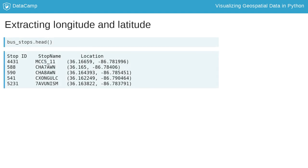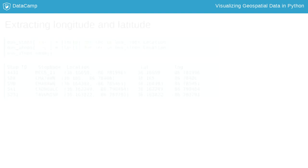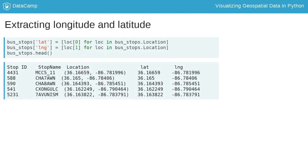Data sets won't always have latitude and longitude neatly separated. Sometimes they are embedded, like in the location column of this bus stop data. In this case, you can just pull each value from the location tuple and store it in a new column, like we've done here using two list comprehensions.